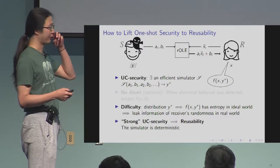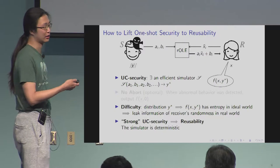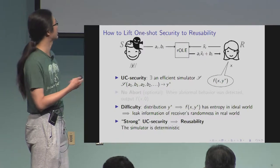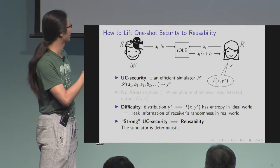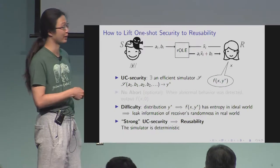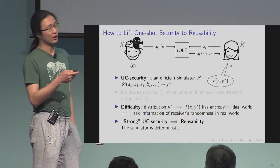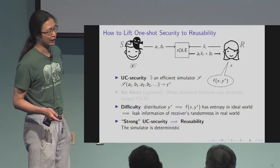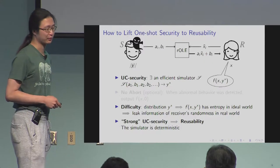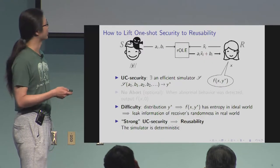So why, assuming you have such a simulator, is it still not reusable-secure? The simulator's output might be a distribution. In such case, the receiver's output would also have entropy in the ideal world, and therefore it also has entropy in the real world. This entropy is not coming from the receiver's input, because it's one-shot secure — but it's coming from the receiver's randomness. That's the problematic part. If it leaks the receiver's randomness, and the sender repeats such protocols, the randomness leakage would accumulate to a degree where the protocol is no more secure.